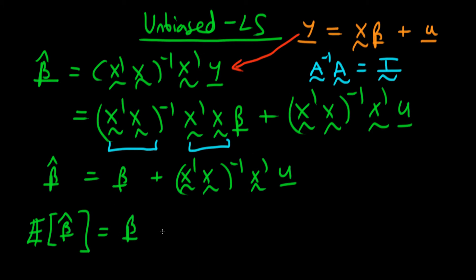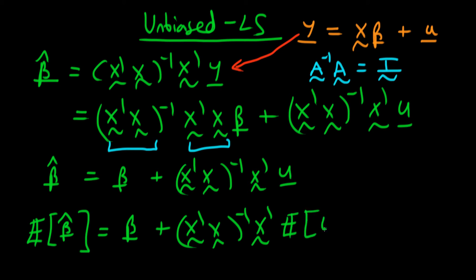For the second term, we have to use the zero conditional mean of errors assumption. If we use that, the expectations operator passes straight through all of the X terms, because our errors u are completely independent of the X terms. So the expectations operator, even though it's operating on all of this, just passes through the X terms and we're left with the expectation of u, which under the zero conditional mean of errors is in fact zero.